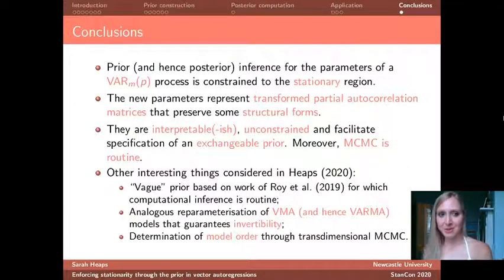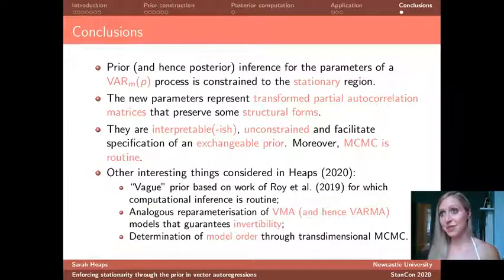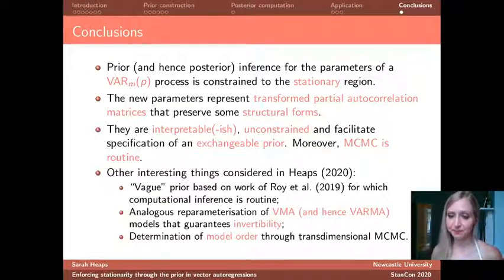So just to sum up with some conclusions, I have presented to you a prior which constrains inference to the stationary region, and this is for the parameters of a vector autoregression. The new parameters that I come up with represent transformed partial autocorrelation matrices, which are reasonably interpretable, they are unconstrained, and also, as I've illustrated, they facilitate specification of an exchangeable prior which will be useful in lots of different applications when we're invariant to the order of the elements in our observation vector. Moreover, as I've demonstrated, MCMC can be carried out in routine fashion.